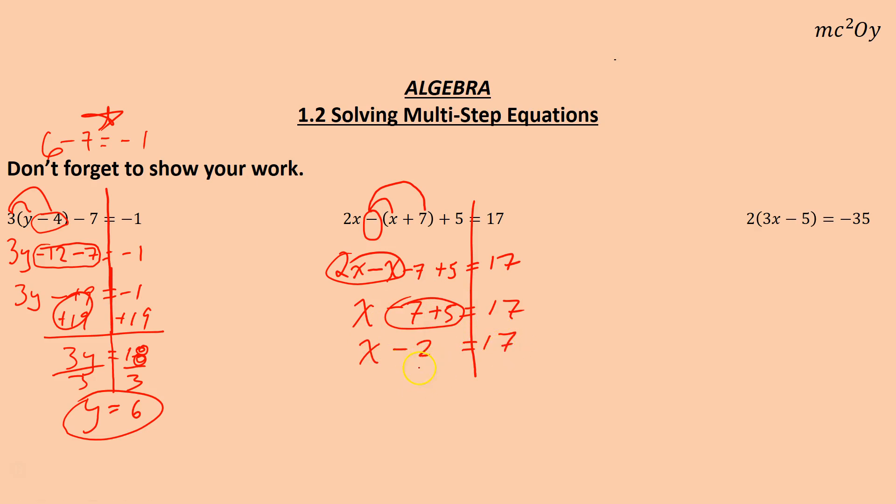Then, now that we can't simplify anything else, we'll add 2 to both sides. We end up with 1x equals 19.